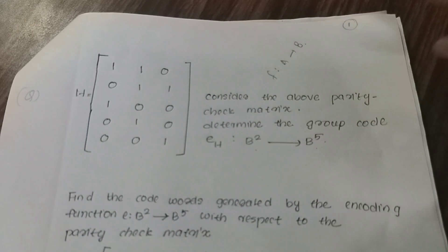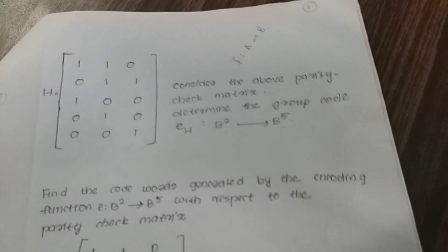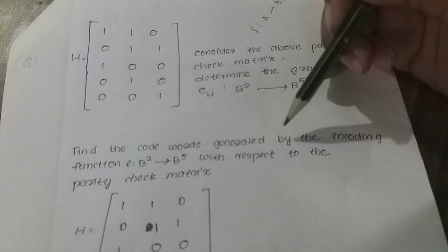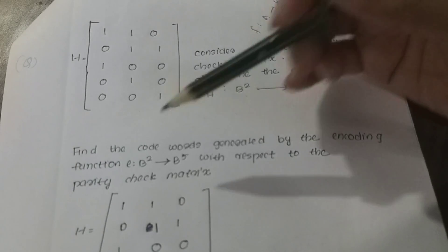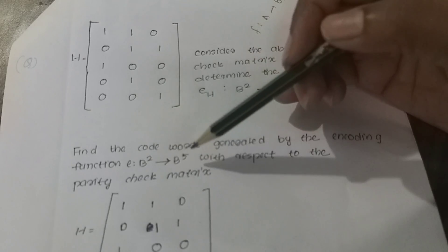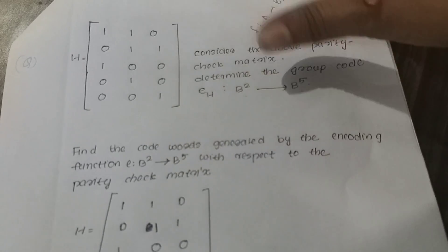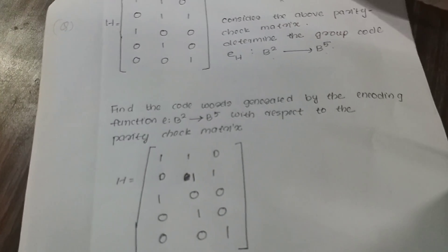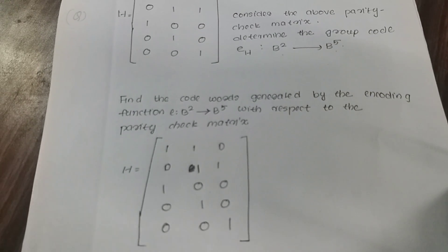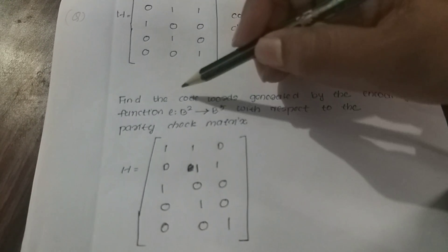So we can find the group code. Let's look at the first question paper: find the code words generated by the encoding function e: b² → b⁵ with respect to the parity check matrix. I will find the group code words.